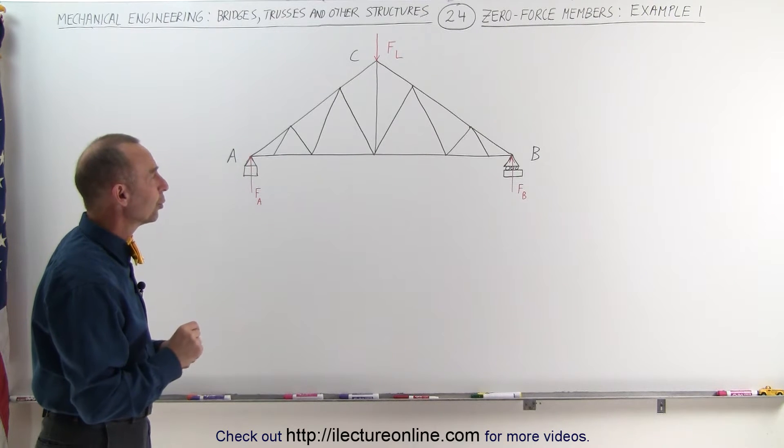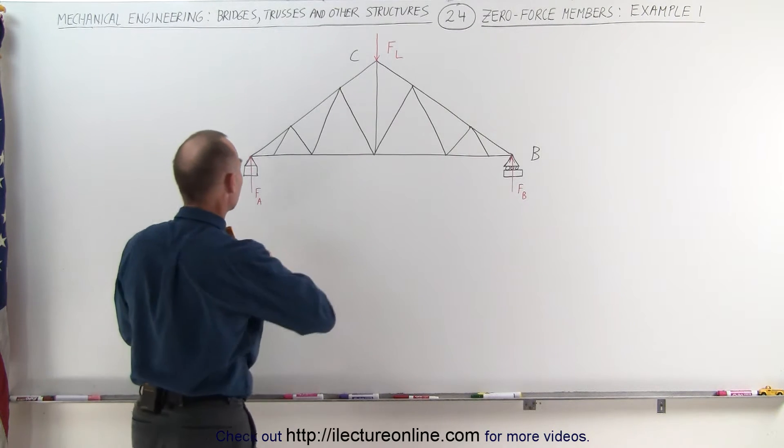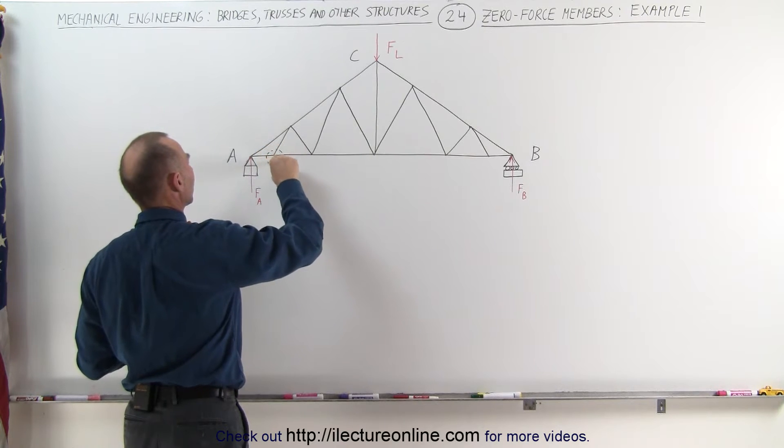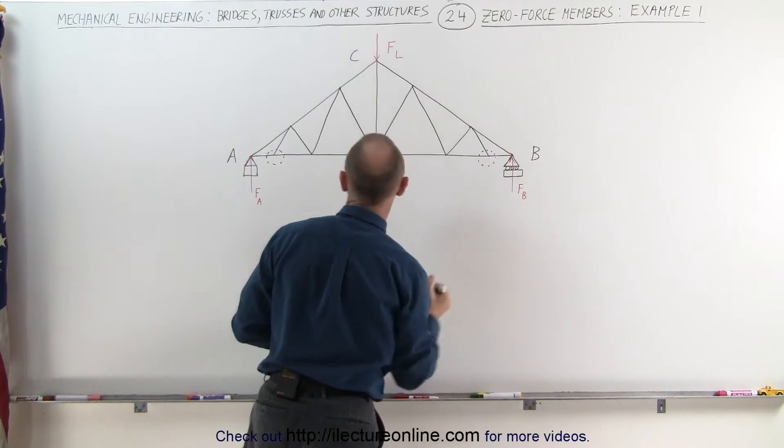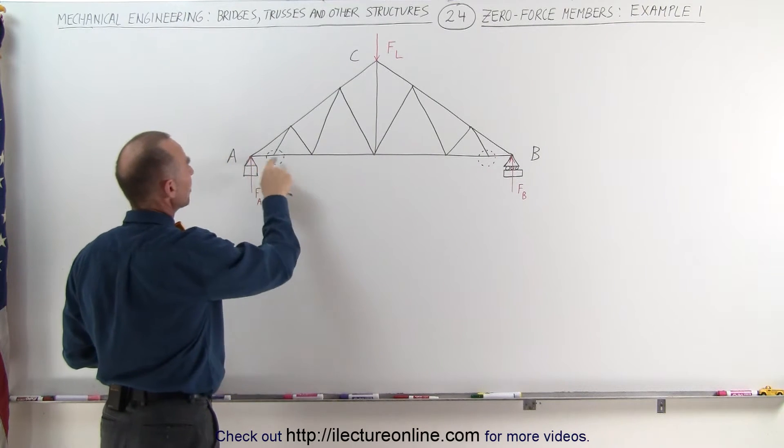Well, if you remember the rule that if there's a joint, and here's a joint right here, that has three members, there's one, and then you can see that there's perfect symmetry here. Let's take a look over here, there's three members right here.